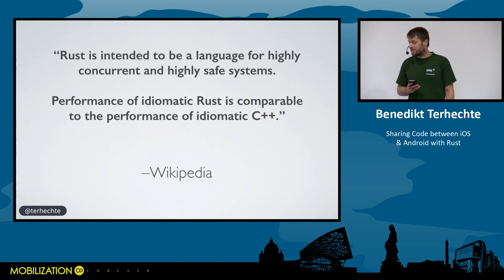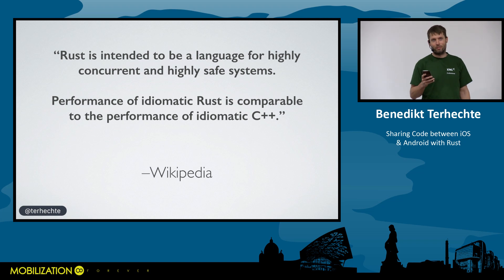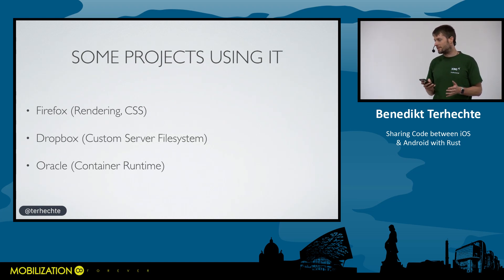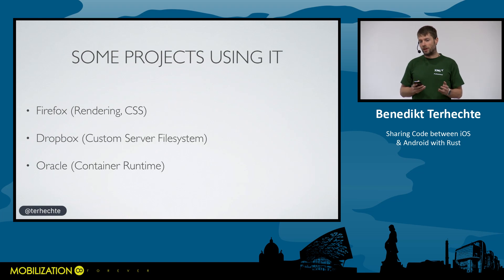Wikipedia says Rust is intended to be a language for highly concurrent and highly safe systems, and the performance of idiomatic Rust is comparable to idiomatic C++. Some notable projects using it include Firefox for rendering infrastructure and CSS parsing, Dropbox for a custom server file system, and Oracle for a container runtime. There are many other projects using it, including cryptocurrencies.